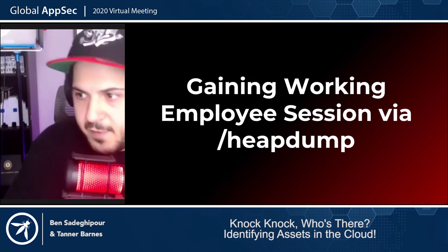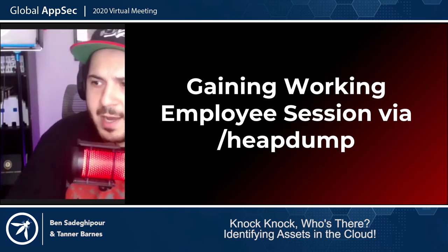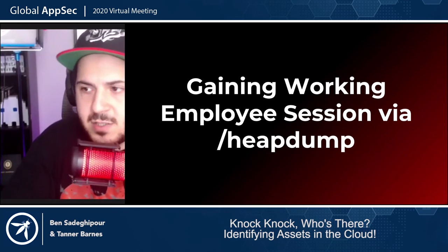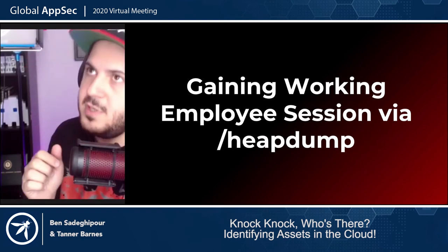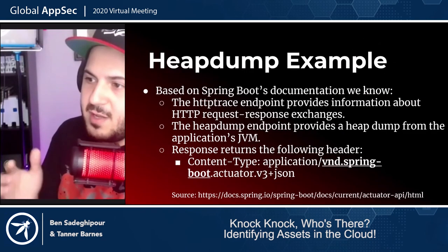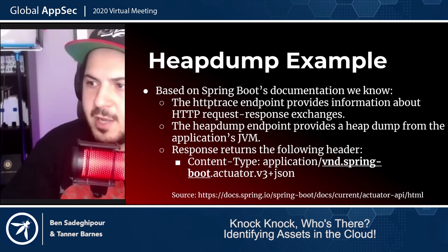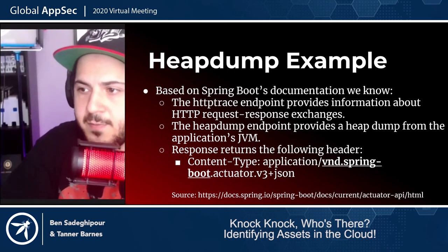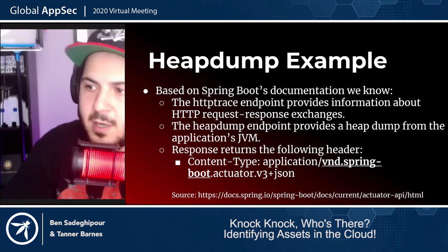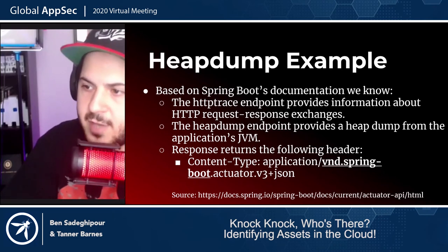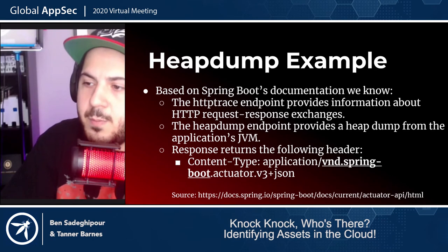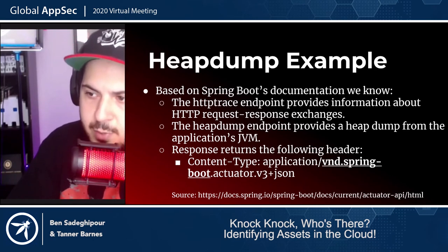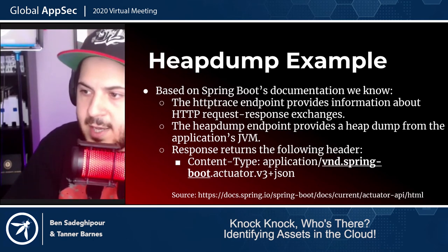This is probably one of the most fun vulns we worked on, giving us access to really cool internal assets in this megacorp. Based on Spring Boot's documentation, there are two particularly important endpoints: HTTP trace and heap dump. HTTP trace gives you the response exchange — if something is on there, your cookies and headers are stored in HTTP trace. The heap dump is obviously a heap dump of the application JVM. If you hit any of these endpoints, the content type will always have 'boot actuator' inside the header — so we could identify it by looking for 'Spring Boot actuator' in the content type.